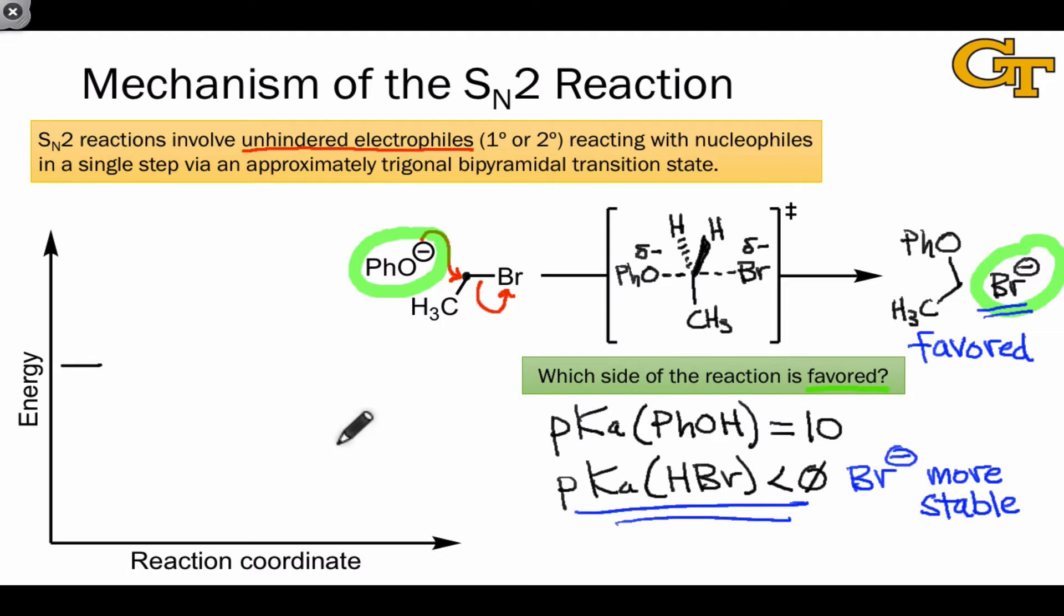Having made this determination of the favored side, we can now place the reactants and products on a reaction coordinate diagram, with the products lower in energy than the reactants. The transition state will come somewhere along the reaction coordinate between these two, and will have higher energy than both of them.